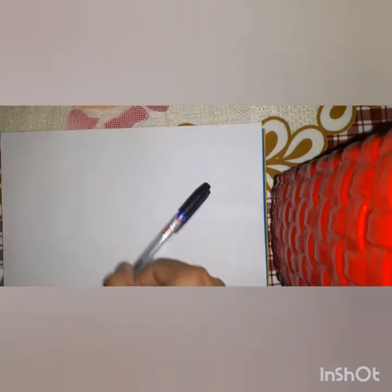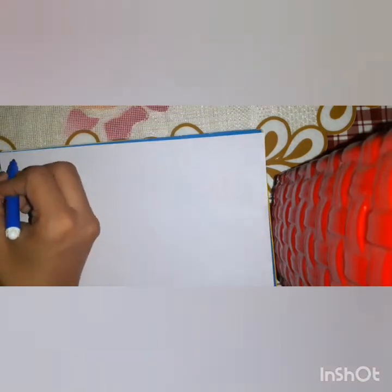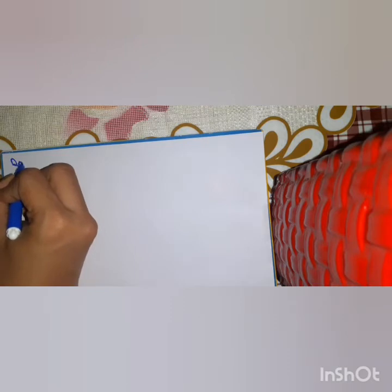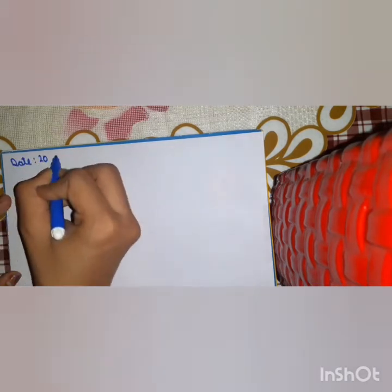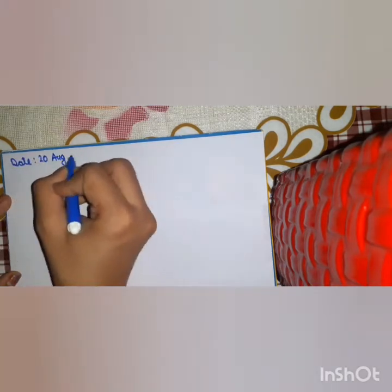I am using an A4 sheet instead of a notebook and I am using a pen instead of a pencil. Let's start. Write down the date in the left side corner. Today is 20 August 2020.